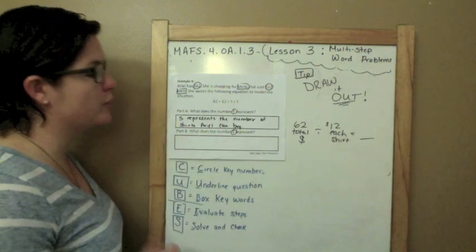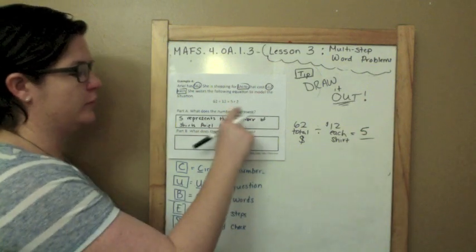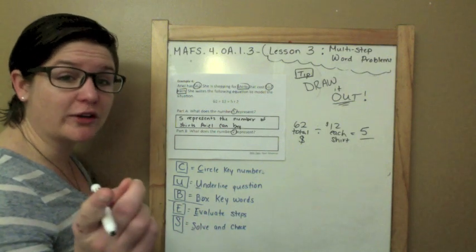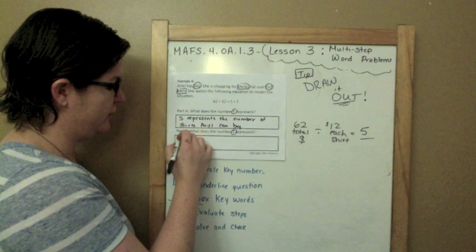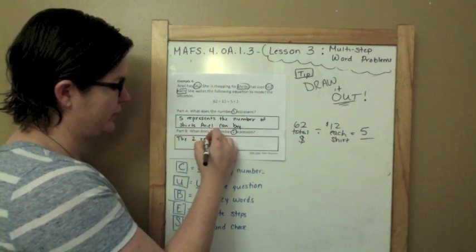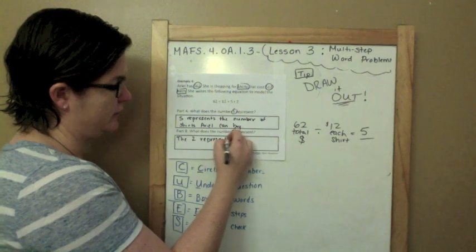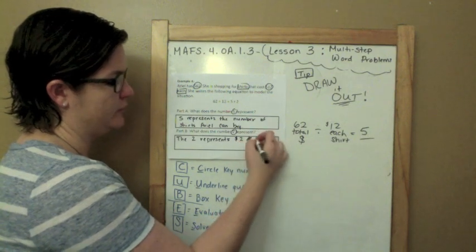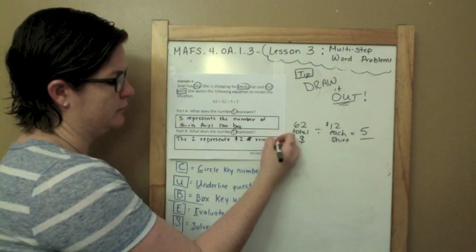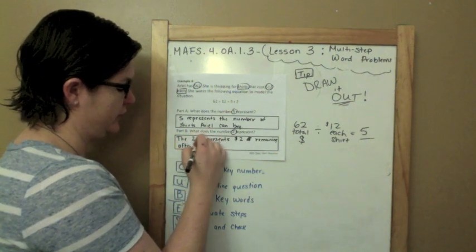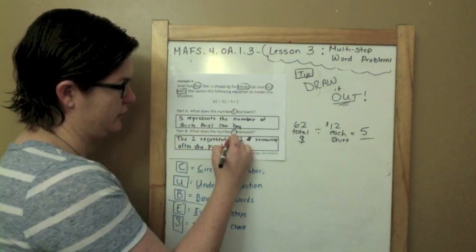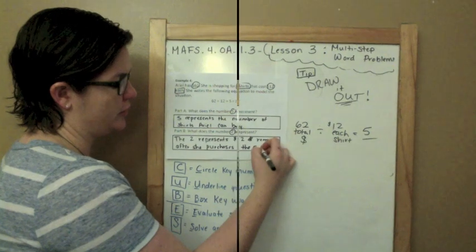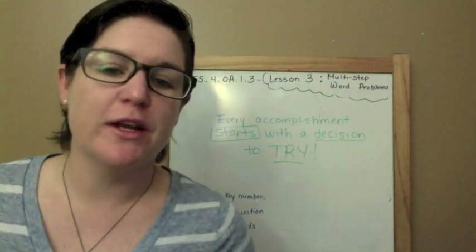What does the number 2 represent? Well, she can buy 5 shirts total, but then she has a remainder of 2. A remainder of 2 what? 2 dollars. 2 represents 2 dollars remaining after she purchases the five shirts.